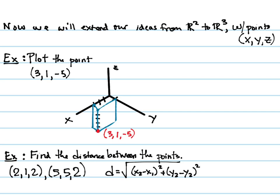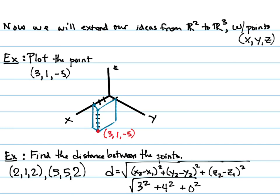This is our distance formula in two dimensions. All we have to do to extend it to three dimensions is add the Z component underneath as well — z2 minus z1 squared. The difference between our X values is 3, so that's 3 squared. The difference between our Y values is 4, so plus 4 squared. The difference between our Z values is 0. So we have 3 squared plus 4 squared equals 25, and the square root of 25 is 5.